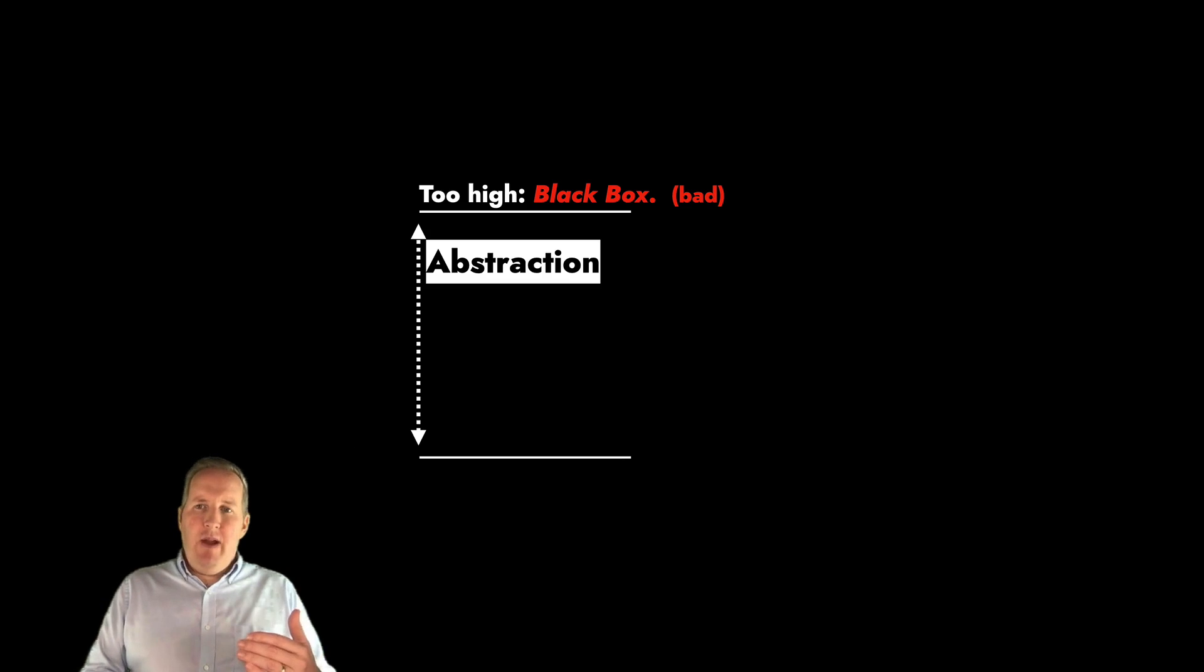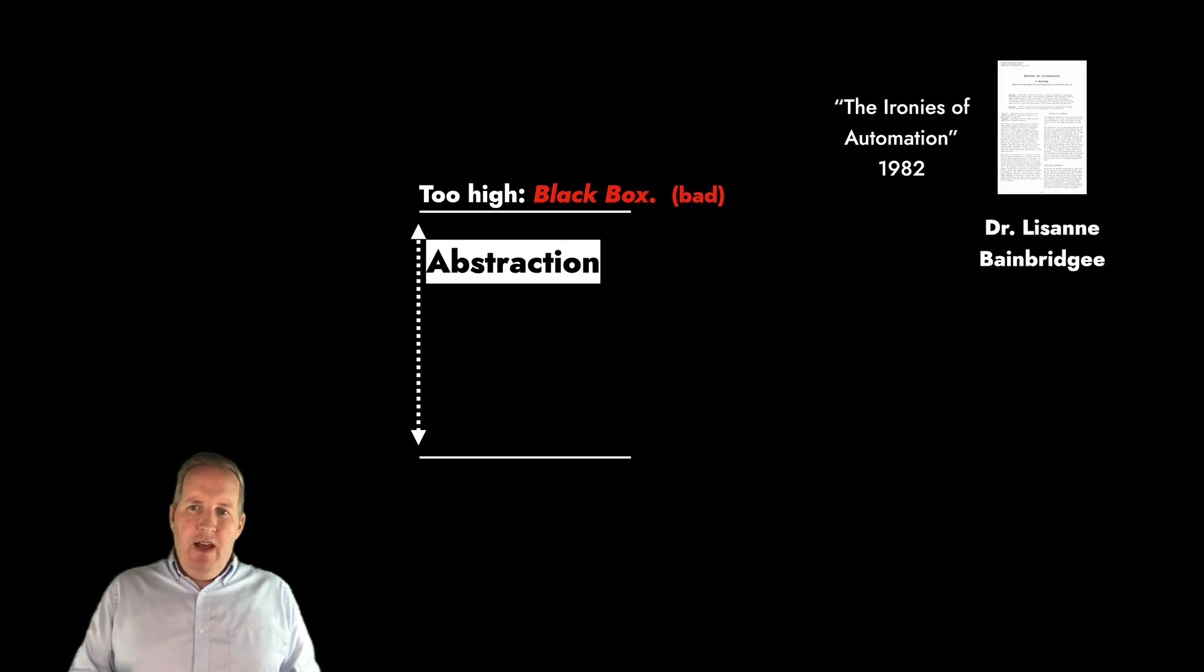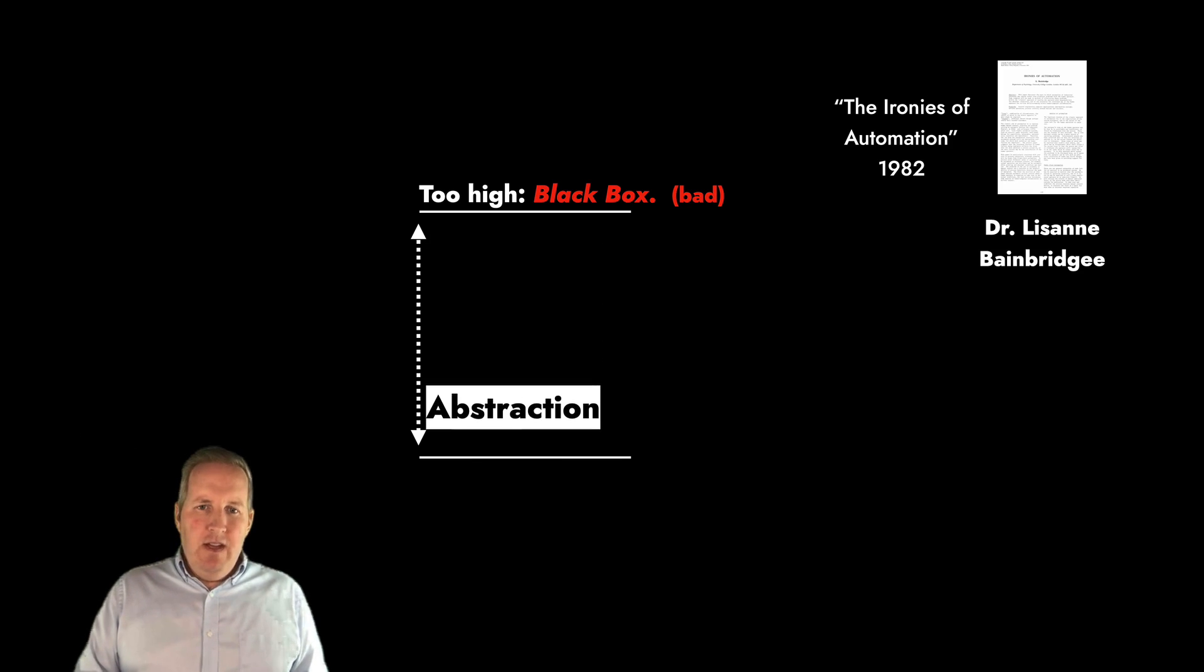There's this abstraction layer that has to be resolved. If it's too high, we get this black box. There's a great paper by Dr. Bainbridge from 1982 called 'The Ironies of Automation' that talks about all the counterintuitive problems and ways our systems fail us when we build these overly automated black boxes. It's a great read. I put that up there with Dr. Cook's paper 'How Complex Systems Fail.' Both are easy reads and amazing because you think they're talking about modern complex computer systems, but they're written decades ago about completely different fields. Highly recommended.